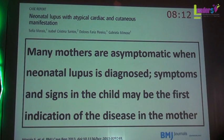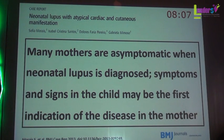The key lesson from this case is that many mothers are asymptomatic when neonatal lupus is diagnosed, and signs in the child may be the first indication of the disease in the mother. When neonatal lupus is suspected, the mother should be examined by a rheumatologist because a hidden lesion may confirm the diagnosis.